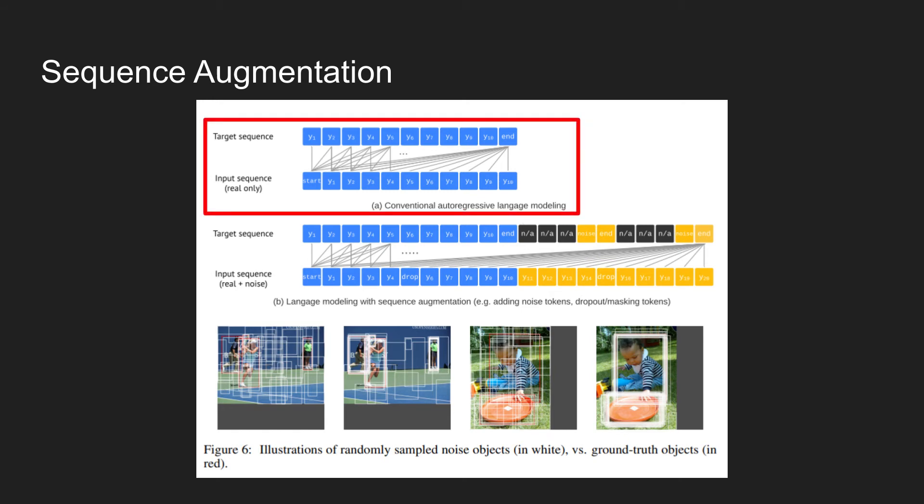This is shown better in the figure right here. The input sequence token is fed into the decoder and decoder is trained to predict the next token in an autoregressive manner, looking at the token predicted in the earlier step.